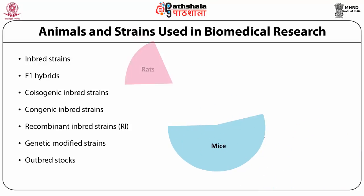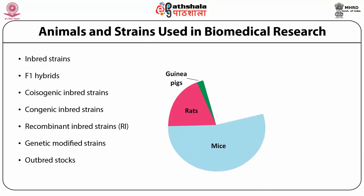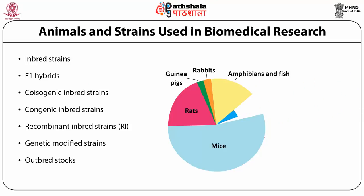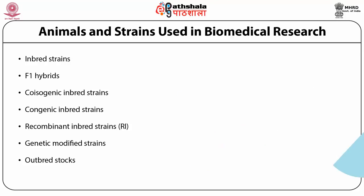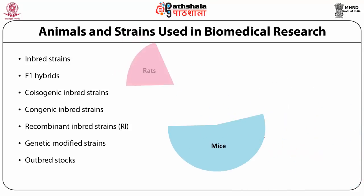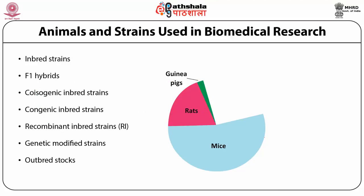Looking at a diagram, mice models are used the most, followed by rats in second place and rabbits in third. Amphibians and fish such as zebrafish are also used, as are non-human primates, carnivores like dogs, and farm animals like sheep and goats.